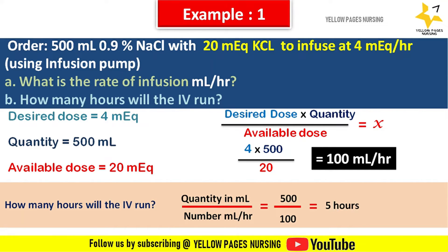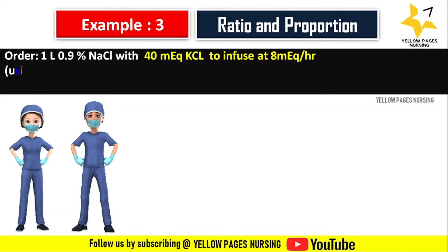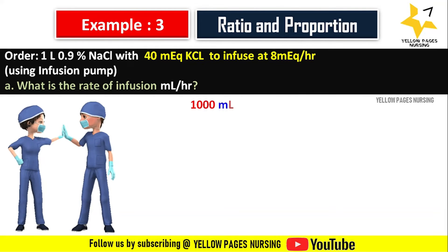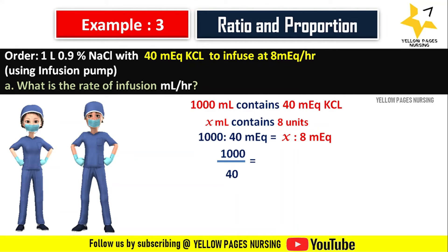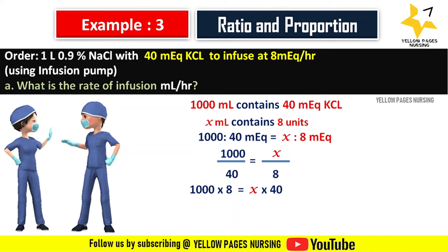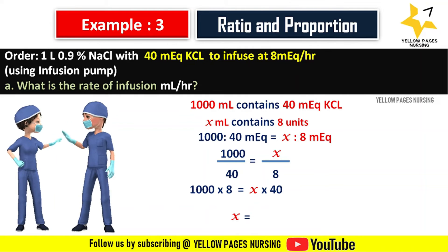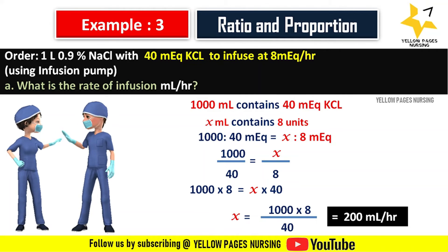Now using the ratio and proportion method with the same example: Doctor's order — 1 liter 0.9% sodium chloride with 40 milliequivalent KCL to infuse at 8 milliequivalent per hour. 1000 ml contains 40 mEq KCL; X ml contains 8 mEq. Setting up the proportion: 1000/40 = X/8. Cross-multiplying: 1000 × 8 = X × 40, so X = 8000 ÷ 40 = 200 ml per hour. We set 200 ml per hour on the infusion pump.